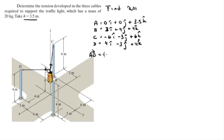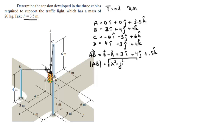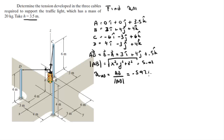To find unit vector AB, first you need to find the vector from A to B, which equals B minus A, giving 3i + 4j + 0.5k. The magnitude of this vector is found by taking the square root of each component squared, which comes out to be 5.02. The unit vector AB is then 0.597i + 0.796j + 0.1k.